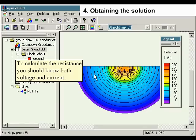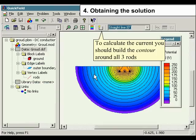To calculate the resistance, you should know both voltage and current. To calculate the current, you should build the contour around all three rods.